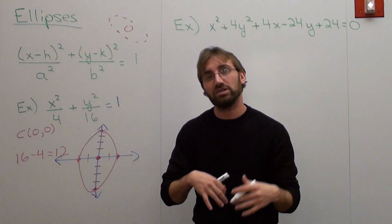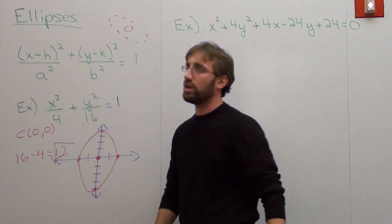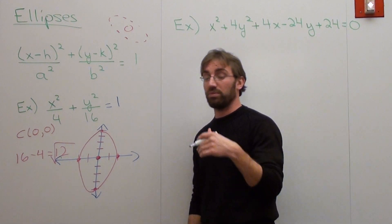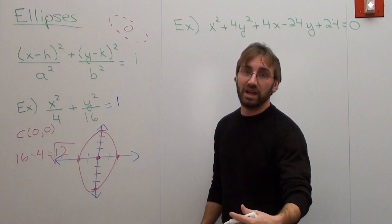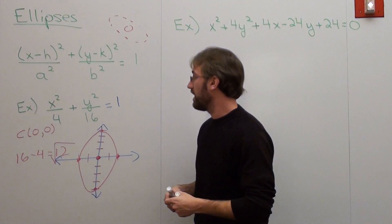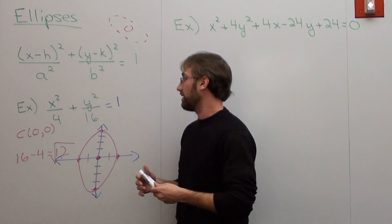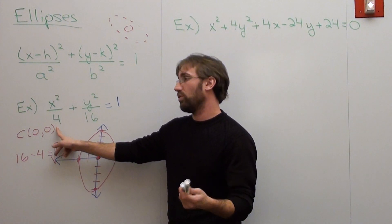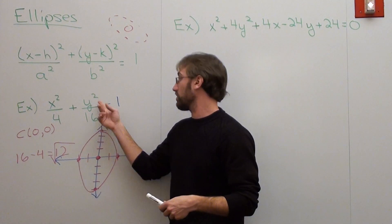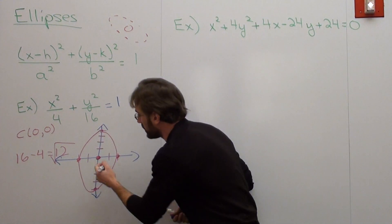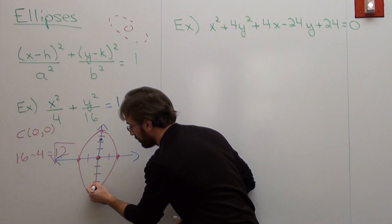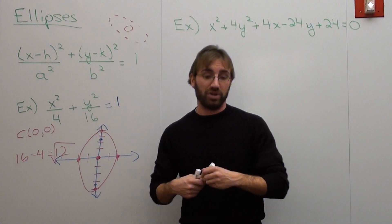After you figure that out, just take the square root. So it's the square root of 12, which is 2 root 3, and root 3 is about 1.7. 2 times 1.7 is about 3.4. And your foci is going to be on the axis that's bigger. So you've got this one, which is 4, and you've got this one, which is 16. So whichever one's bigger is the one where it goes. So it goes with the y. So your foci is 3.4, like right there.